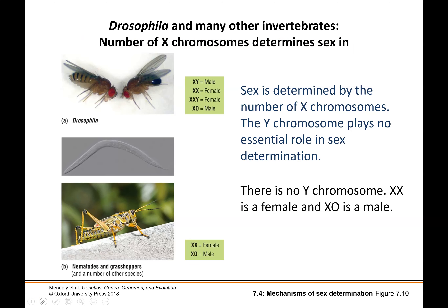Drosophila is a good example of the XY/XO situation, and there are many other invertebrates — particularly several types of insects — that follow the same pattern. In Drosophila, sex is determined by the number of X chromosomes, and the Y chromosome really plays no specific role in sex determination. It's actually the ratio of X's to the number of autosomes within the organism that determines whether or not the individual is female.